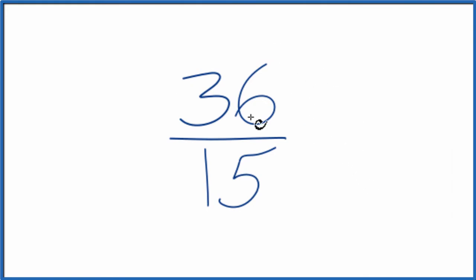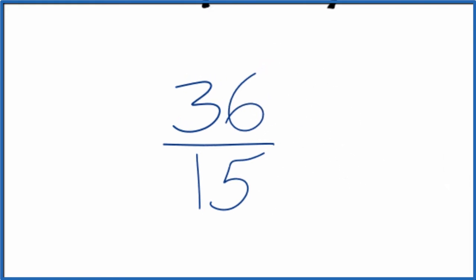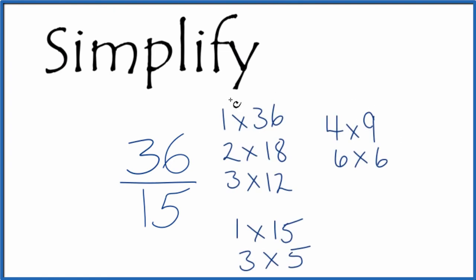So let's put the factors for 36 and 15 up here on the screen. These are the factors for 36, these are for 15, and the greatest common factor, that looks like that's going to be 3.